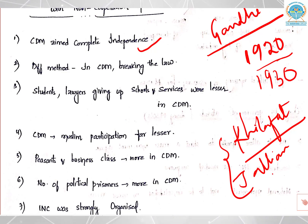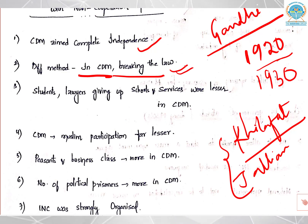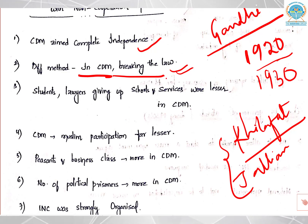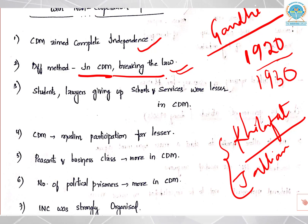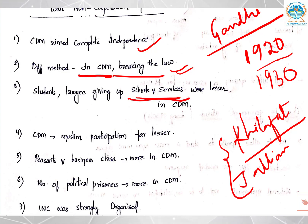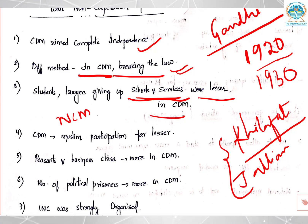Methods are also different in both movements. In civil disobedience it is about breaking the law — Gandhi went from Sabarmati Ashram to break the salt law, because the salt monopoly was with the British government. Whereas in non-cooperation, it is not breaking the law but just not following it. The number of students and lawyers giving up schools and services was comparatively lesser in civil disobedience, whereas in non-cooperation so many lawyers gave up their service and so many people resigned from schools and joined national colleges.